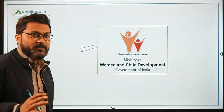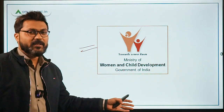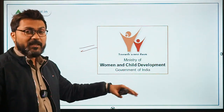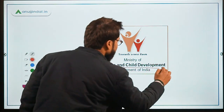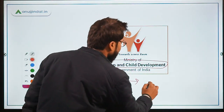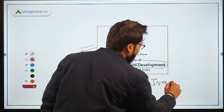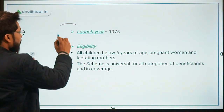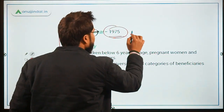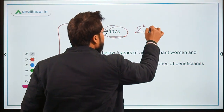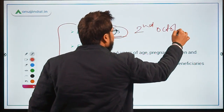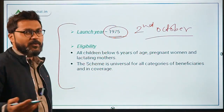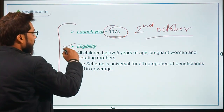Since we are talking about child development, the ministry is obviously the Ministry of Women and Child Development, which is currently headed by Smriti Irani — but before your exam, confirm the current minister's name. The scheme was launched in the year 1975, on Gandhi Jayanti, that is, 2nd October 1975.